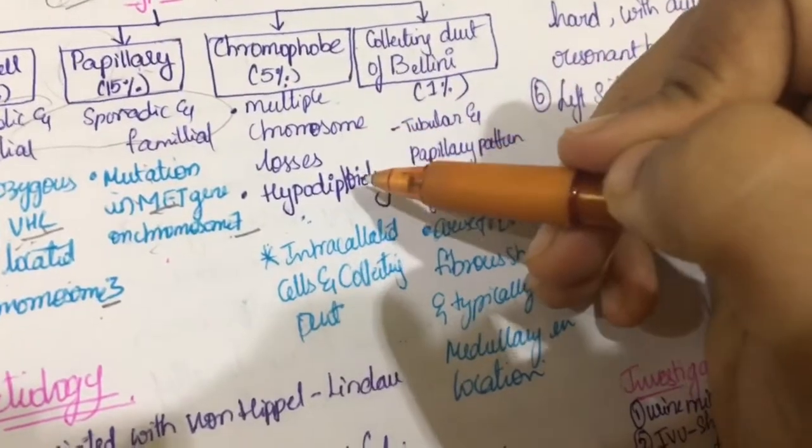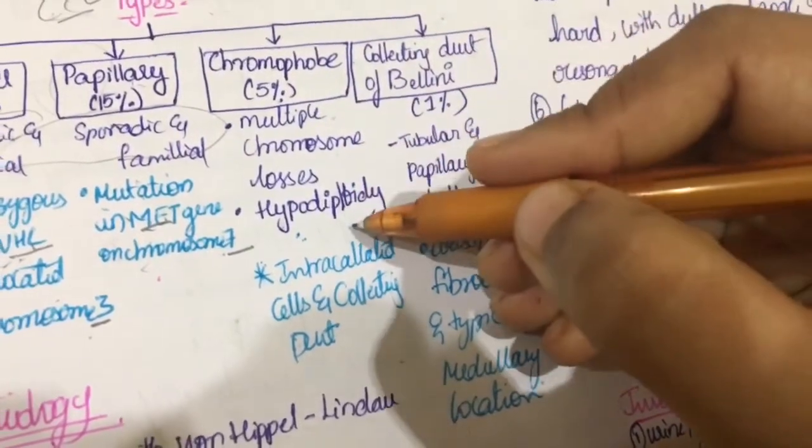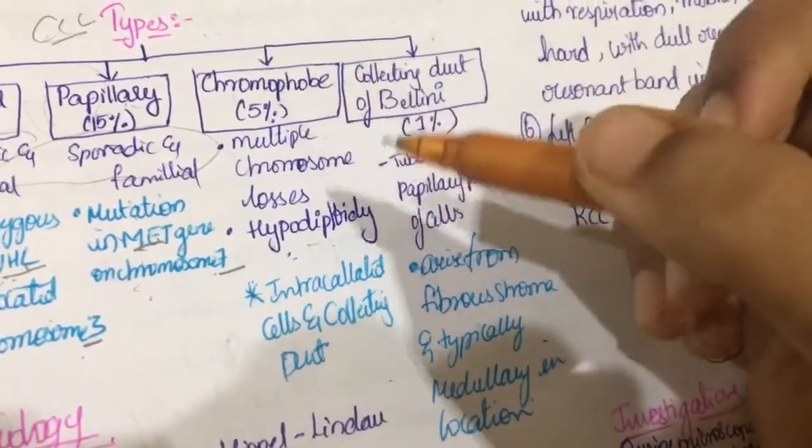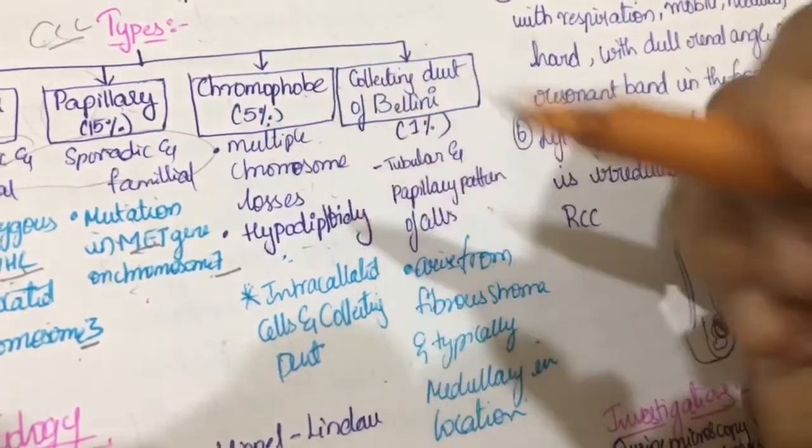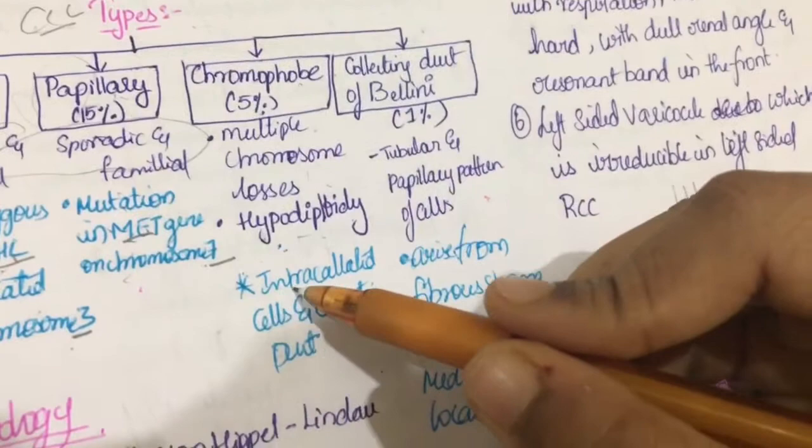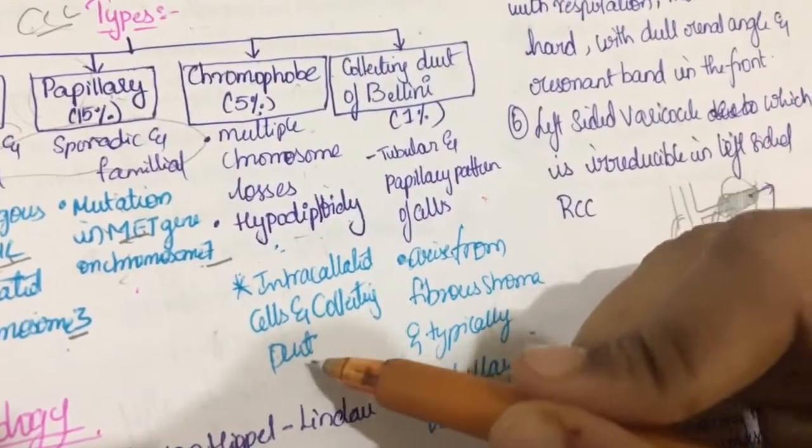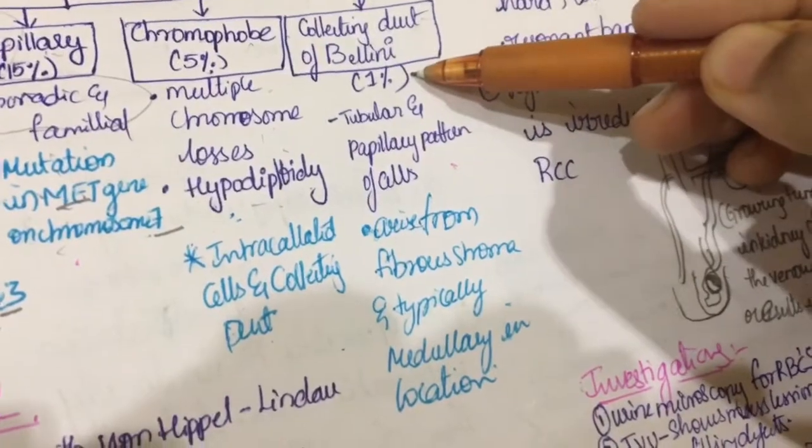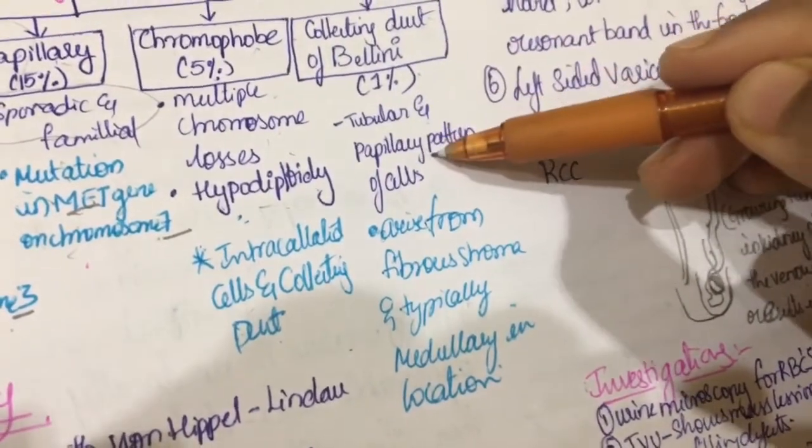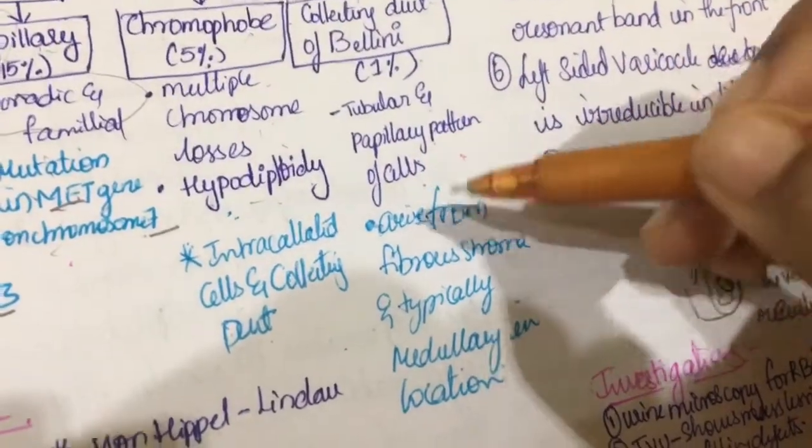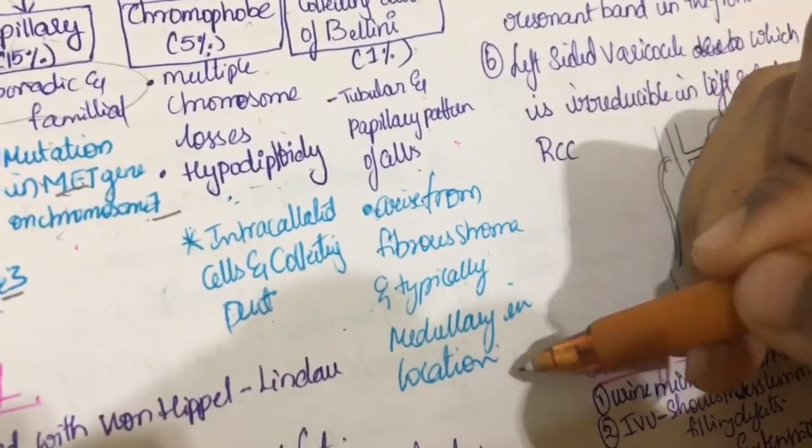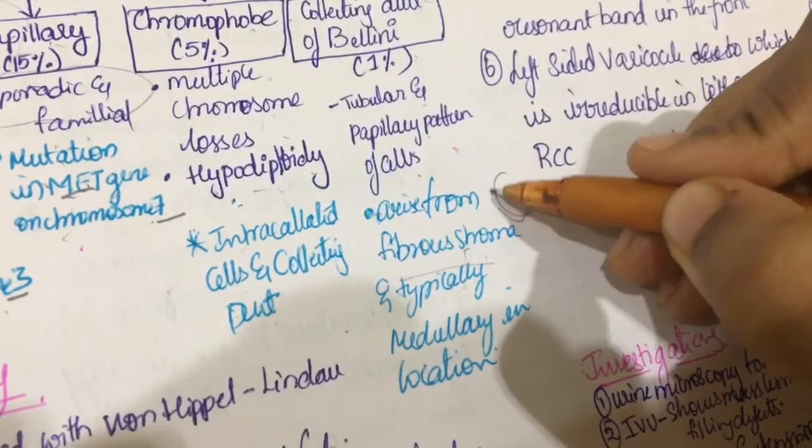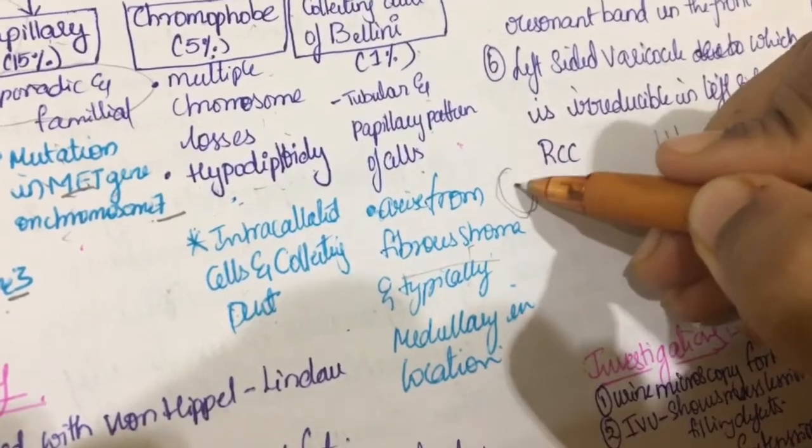And chromophobe multiple chromosome loses because there are haplodiploidy which result in multiple chromosome loss in chromophobe type. They are located in intracalliator cells and collecting duct. And collecting duct of bellini. It accounts for 1% in tubular and papillary pattern of cells are present. Arise from fibrous stroma and typically medullary in location.